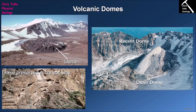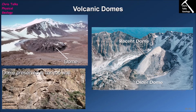A volcanic dome tends to grow from the inside. Think of it like a balloon — as you add more air, you push the outside further and further out. In the core of the volcanic dome, new lava is being injected. Because the lava is so viscous it can't easily flow out, most of it gets trapped inside, but the pressure of this new lava pushes the outside of the dome further out, increasing its diameter with each new injection.